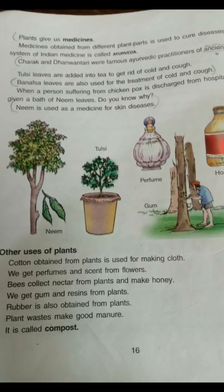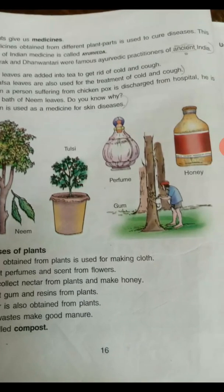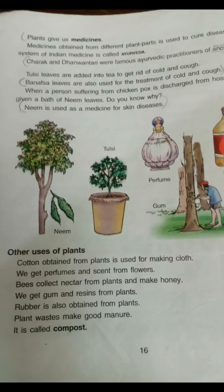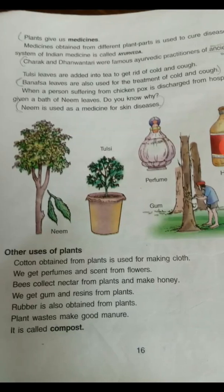The bark of some trees is also very useful. We get gum from the rubber tree, and the milk obtained from it is called latex. Latex is collected and made hard by adding sulfur to it. Can you find out where the rubber plant grows in your locality?